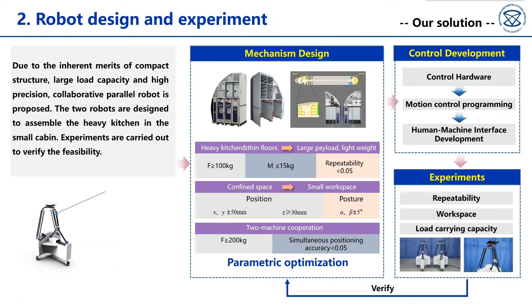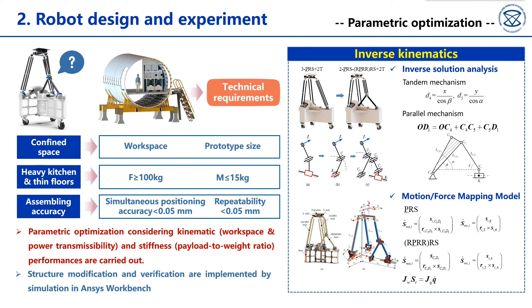The video shows our final design. It went through mechanism design, control development, and experiments. Our idea is to first summarize the design requirements. Then, we carry out parametric optimization considering kinematic and stiffness performances, to obtain the dimensions of the parallel module. Finally, structure modification and verification are implemented by simulation in ANSYS Workbench.